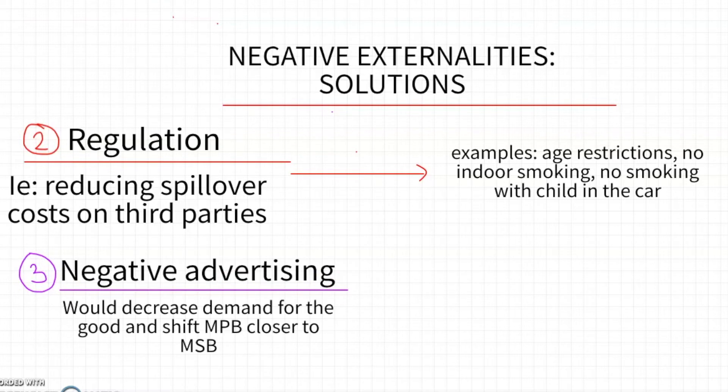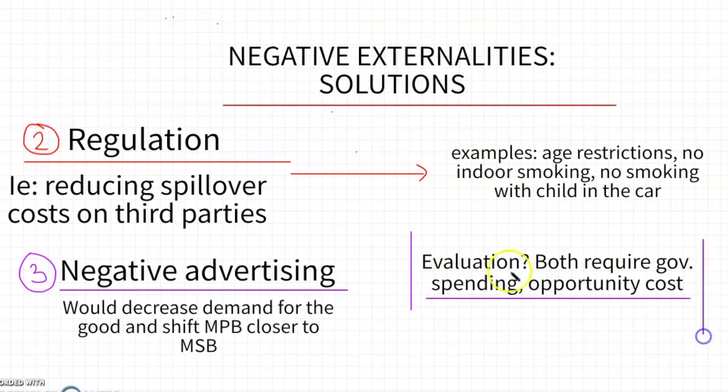The third solution would be negative advertising. So trying to teach people that what they're doing is actually not as beneficial to them as they believe and the costs are much higher. If you've ever seen a packet of cigarettes, you'll probably see that they have quite gruesome images of the consequences of smoking. That can be considered negative advertising because the goal is to reduce the marginal private benefits. You're trying to reduce the perception of the benefits of this good and bring it closer to MSB, reduce demand, reduce consumption.